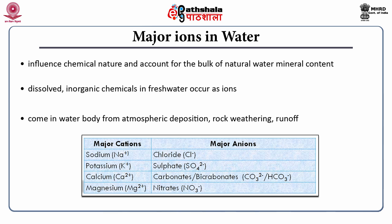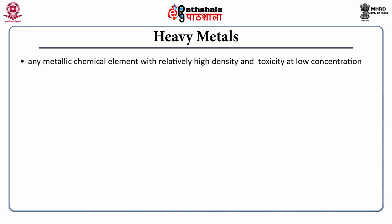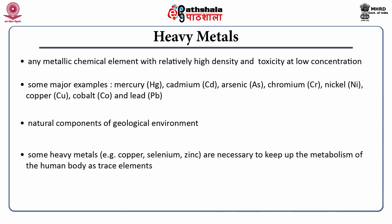Nitrates even at low concentration can cause health problems to infants of 6 months of age or less and pregnant women by affecting the oxygen-carrying capacity of the blood. Heavy metals refer to any metallic chemical element that has a relatively high density and toxicity at low concentration. Some major examples are mercury, cadmium, arsenic, chromium, nickel, copper, cobalt and lead. Heavy metals are natural components of the geological environment and enter the human body via food, drinking water and air. Some heavy metals, for example copper, selenium and zinc, are necessary for human metabolism as trace elements; however, they can be very poisonous at higher concentrations, leading to serious health diseases.